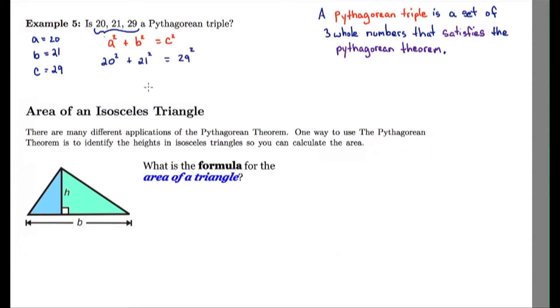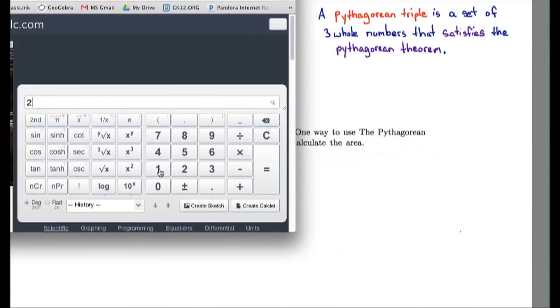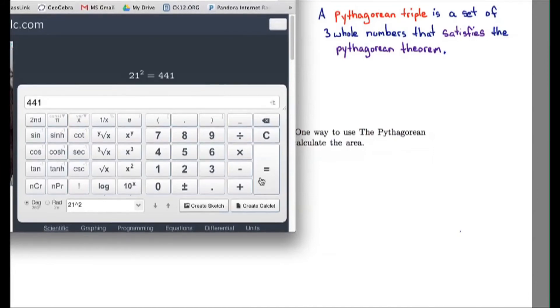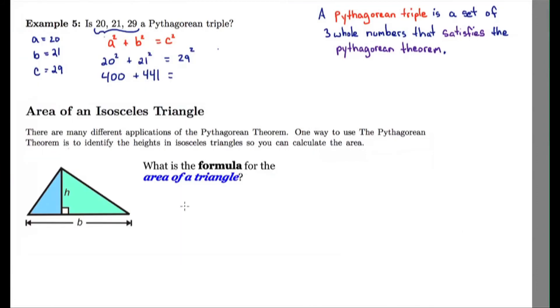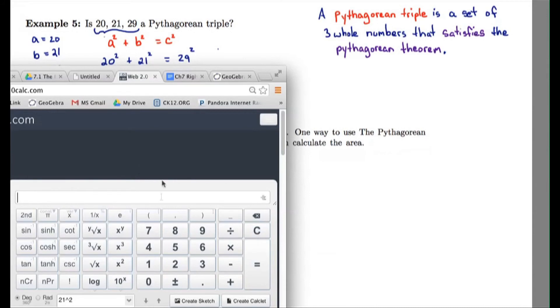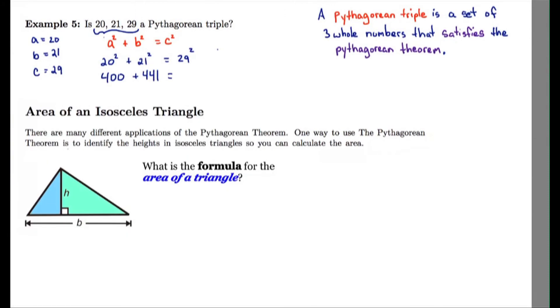29 must be C because it's the larger one. So now all we have to do is check to see if the left side of the equation equals the right side of the equation. So I'm going to use my calculator here and find 21 squared, 441. And also I need to know 29 squared, which is 841. So is 400 plus 441 equal to 841? And the answer is yes. So it worked. Therefore, 20, 21, 29 must be a Pythagorean triple.